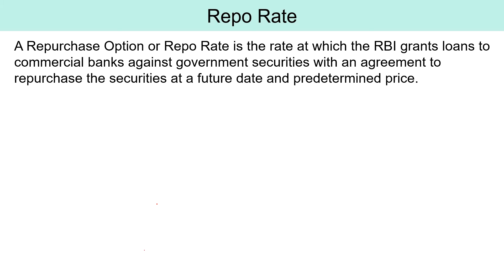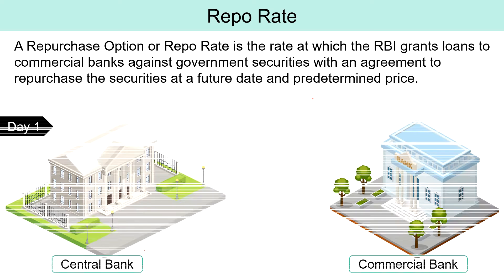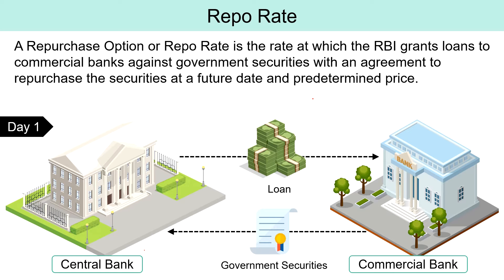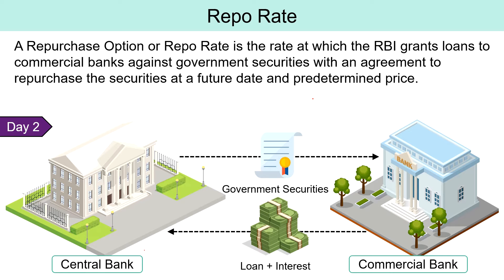Repo Rate is the rate at which RBI grants loans to commercial banks against government securities, with an agreement to repurchase the securities at a future date and at a predetermined price. It is the rate at which banks raise money from the central bank when there is any deficiency of funds. Banks also borrow money in case of an emergency or to comply with CRR or SLR requirements. I have already created a separate video on the difference between CRR and SLR, so you can watch that also.